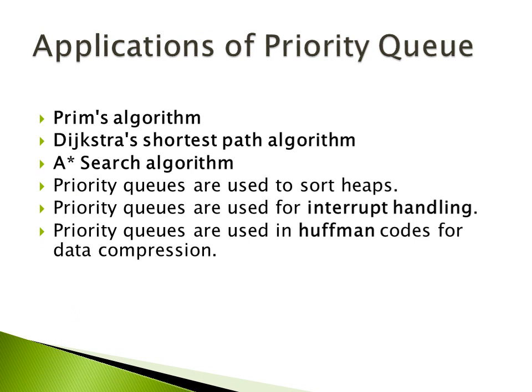Some priority queue based applications include Prim's algorithm, Dijkstra's algorithm, and the A* search algorithm. Priority queues are also used to sort heaps. Microprocessor interrupt handling is done with the help of a queue, and Huffman codes for data compression also require priority queues.